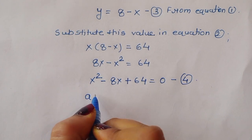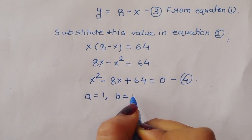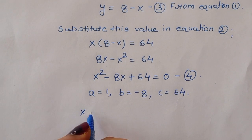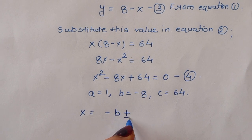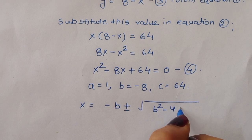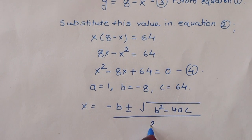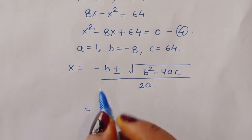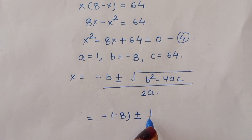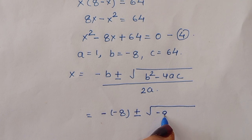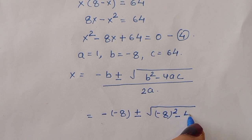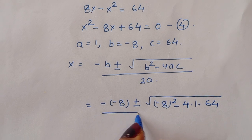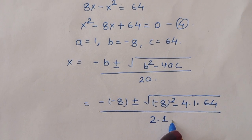From equation 4, the coefficients are: a is equal to 1, b is equal to minus 8, and c is equal to 64. Now the value of x is given by the quadratic formula: x equals minus b plus or minus the square root of b squared minus 4ac, all divided by 2a. Substituting: minus b is minus(minus 8), b squared is (minus 8) squared, minus 4 times a times c is minus 4 times 1 times 64, divided by 2 times 1.